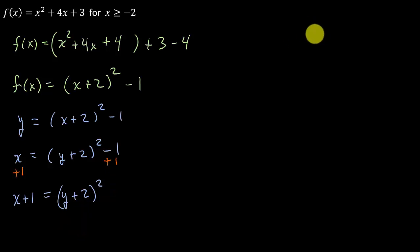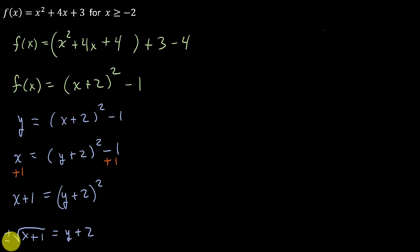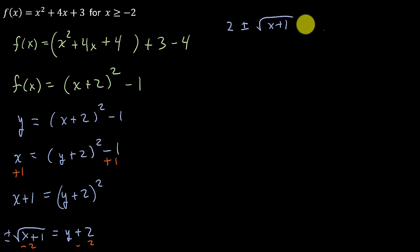Taking the square root gives us y plus 2 equals the square root of x plus 1. But don't forget — we use the square root property, so it's plus or minus the square root of x plus 1. Then we subtract 2 from both sides, giving y equals negative 2 plus or minus the square root of x plus 1.